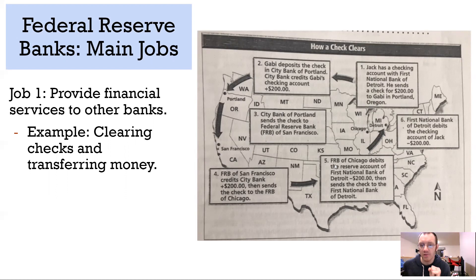Then the Federal Reserve of Chicago gets ahold of this information, and they take $200 out of First National Bank — Jack's account. So the Chicago branch of the Federal Reserve takes the money from Jack's account and gives it over to San Francisco.